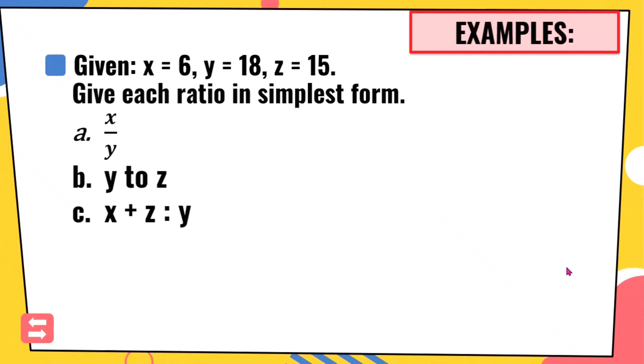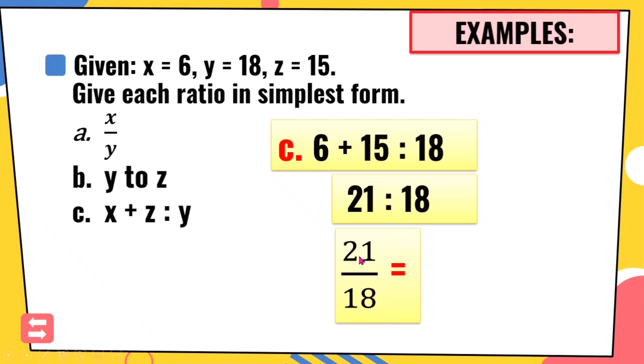Next, letter C. X plus Z is to Y. Palitan lang natin yung mga value, itong mga variables natin, based dito sa given. Ang X natin is 6, yung Z natin is 15. So 6 plus 15 is to Y. 6 plus 15 is 21, is to 18. Then, pwede ulit natin itong i-simplify. Gawin lang natin fraction. Ano ang pwede natin i-divide sa kanila pareho? Pwede natin silang i-divide sa 3. 21 divided by 3 is 7, and 18 divided by 3 is 6. So the answer, 7 over 6, or 7 is to 6.